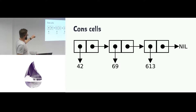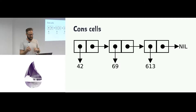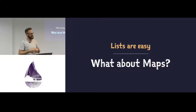42 is the head of the list. There are three elements in the list, and the tail of the last element is nil, which is where the list terminates. Lists are easy to conceptualize in an immutable way because we can think about prepending stuff, and it gets a bit more complicated when we've got things like maps.